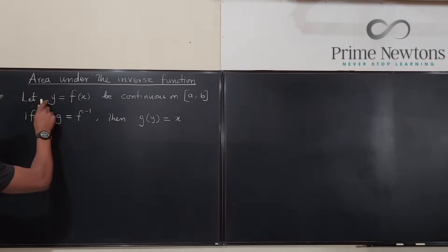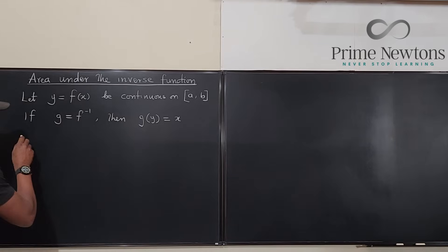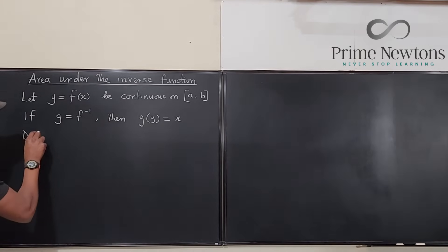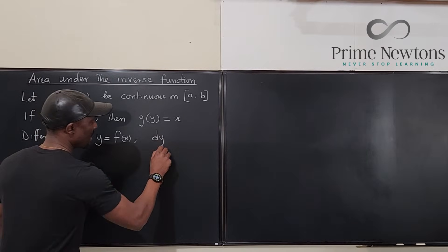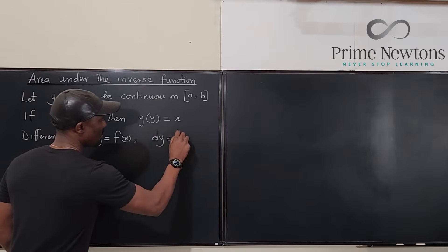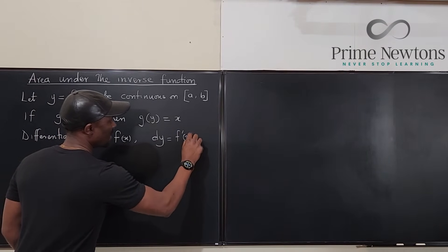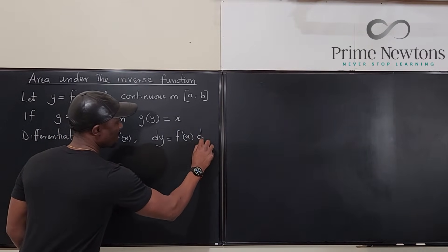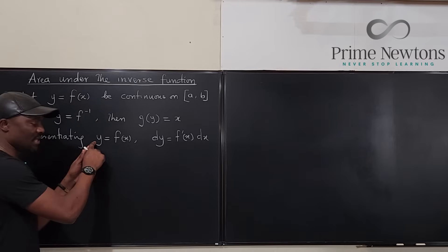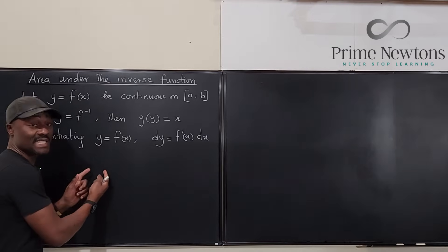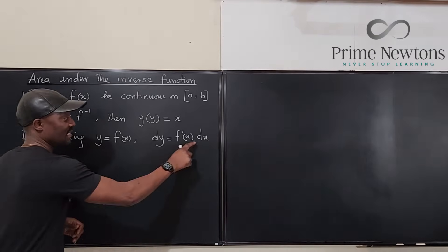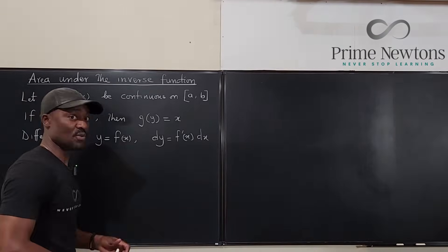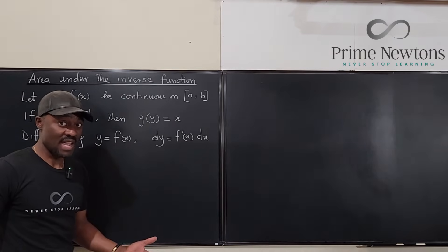If we differentiate both sides of y = f(x), we get dy = f'(x) dx. That is, dy/dx = f'(x), and moving dx over gives us dy = f'(x) dx. We're building something with this relationship.